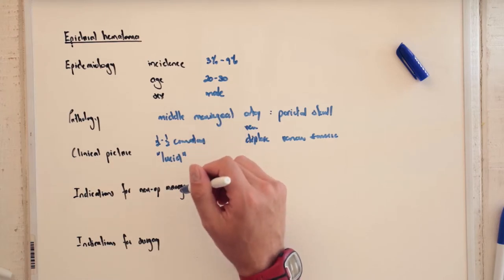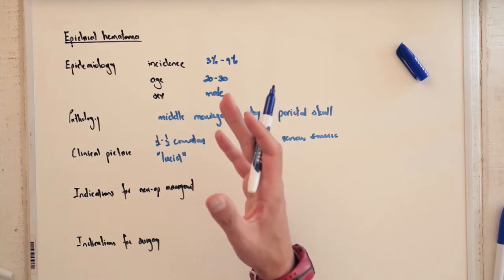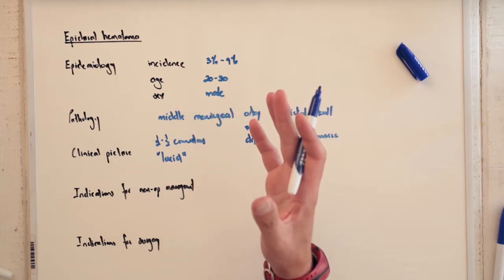So who do we operate and who do we not operate? We are looking at the size of the clot, the volume of the clot, and whether there's any midline shifts.